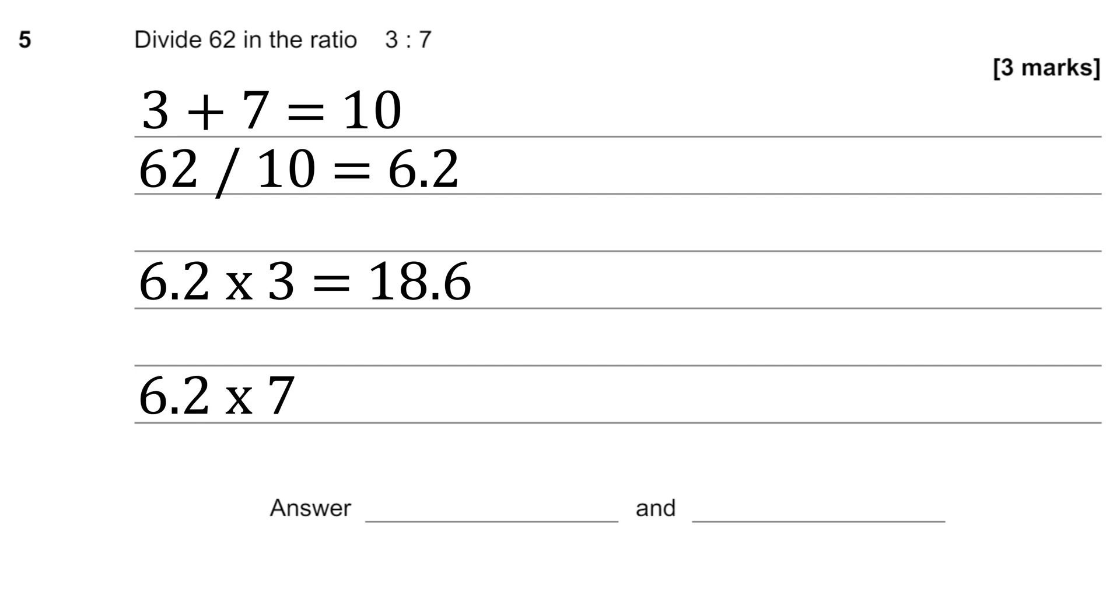Now 6.2 times 7 is a bit harder, I would recommend either separating them out, so you can do 6 times 7 plus 7 times 0.2, or you know the remainder is going to be the original amount minus the other amount, so it'll be 62 minus 18.6.